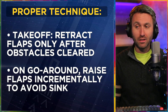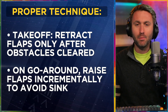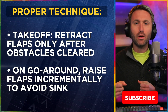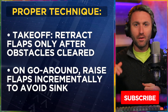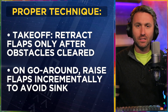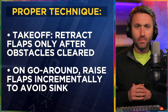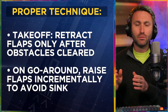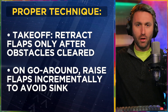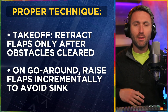On a go-around, raise the flaps incrementally to avoid sink. I cannot tell you how many times I saw pilots go around with full power, carb heat out, all that stuff — and then just pull all the flaps out at once. All of a sudden, all that climbing you're trying to do is degraded because the lift you had instantly goes away all at once. What I like to teach, especially in a retractable gear situation with a couple notches of flaps: maintain a positive rate of climb, clear your obstacles, then take away one notch of flaps, then bring the gear up.